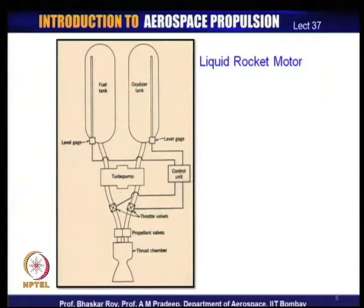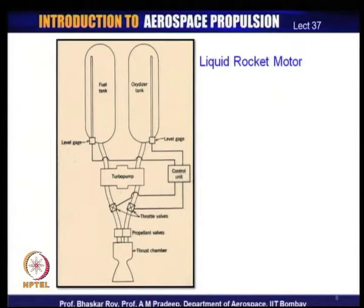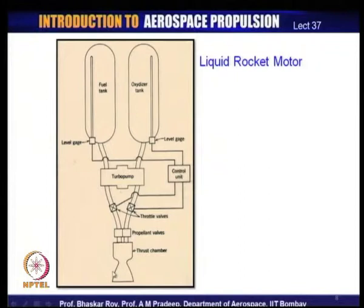In a simple liquid rocket motor, you have two tanks storing the fuel and the oxidizer. The fuel and oxidizer are pumped from these tanks with the help of turbo pumps — pumps run by turbines. They flow through piping, with pumps supplying them toward the rocket engine. The rocket engine has a nozzle, and the propellants come through throttle valves and are pumped into the combustion zone — the combustion chamber.